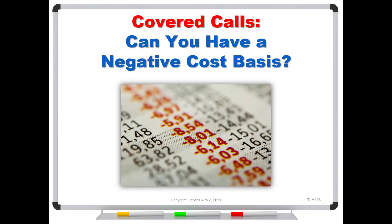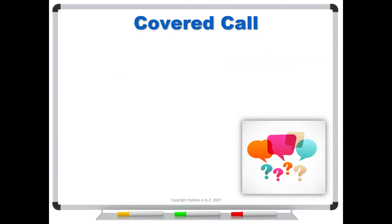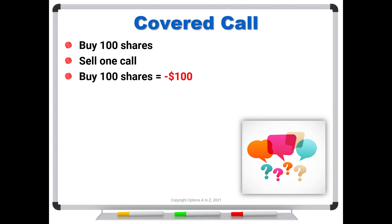First, to understand what that means, let's look at the covered call again. Remember, this is a strategy where you're going to buy, let's say, a hundred shares and you will sell one call against that. When you do that, you have the potential obligation to sell those shares for the strike price. So let's say you buy a hundred shares of stock and you spend a hundred bucks, and you sell the hundred dollar call for five bucks. It doesn't matter if it's at the money, in the money, or out of the money — you're just selling a call and collecting some premium.